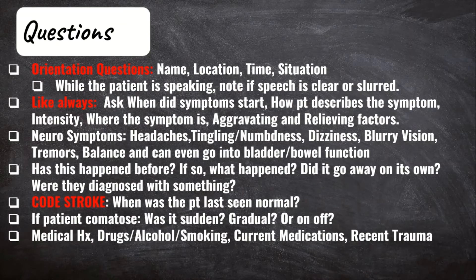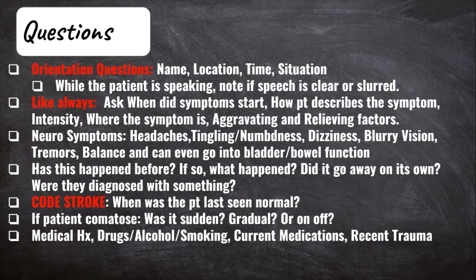Let's get into the important questions you should be asking when performing your neuro assessment. Start with orientation questions: What is their name? Where are they currently? What day, month, or year is it? And the situation — why are they in the ER? These questions assess their ability to think and recall information, and if something is off internally, it won't be easy. While your patient is speaking, note if their speech is clear or if they are slurring. Always ask the when, the how, and the where.